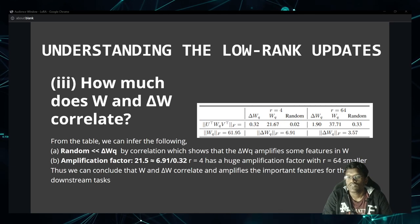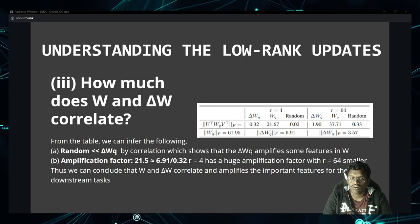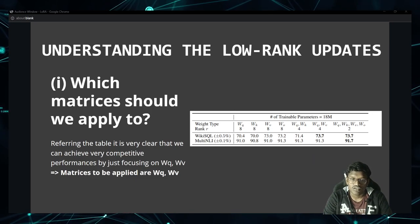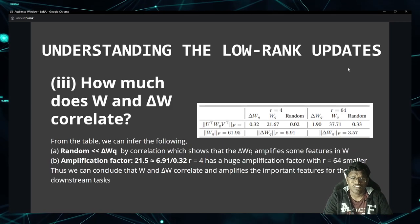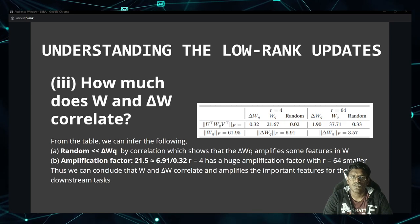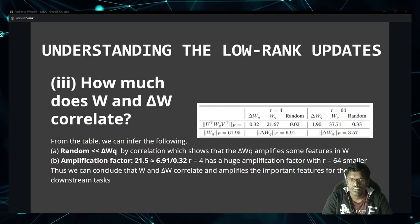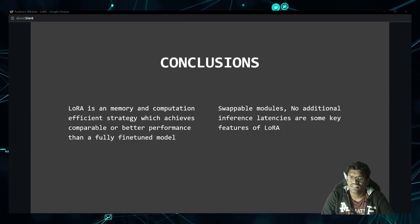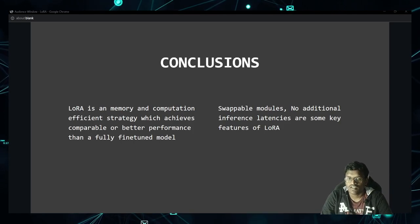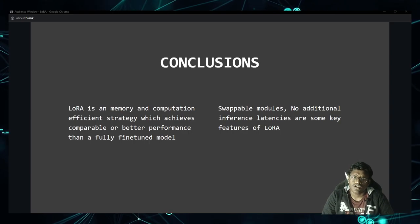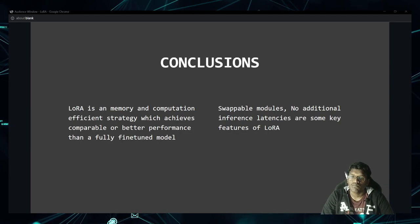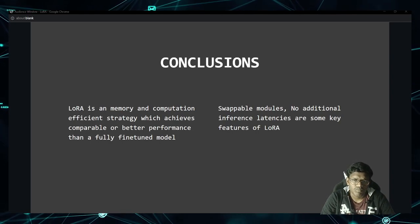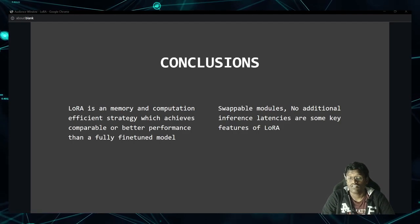Summary of understanding low rank updates: first, apply LoRA only to WQ and WV. Second, LoRA rank can be 4 or 8 based on budget. Third, with smaller rank, the importance amplification factor is higher than with larger ranks. Conclusions of the paper: LoRA is a proven memory-efficient strategy that achieves comparable or better performance than a fully fine-tuned model, with no additional inference latency and swappable modules.